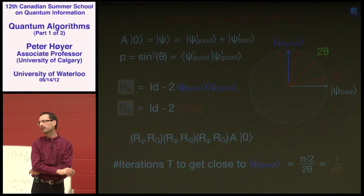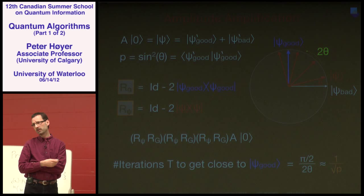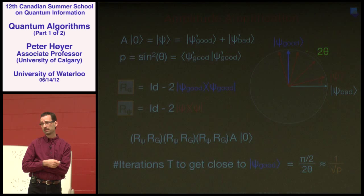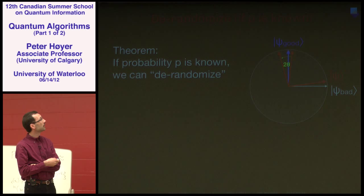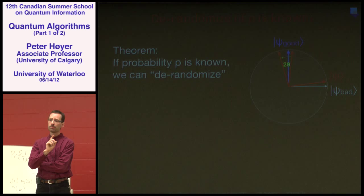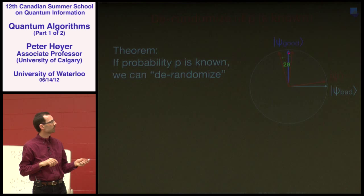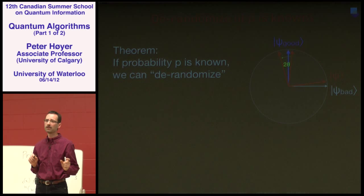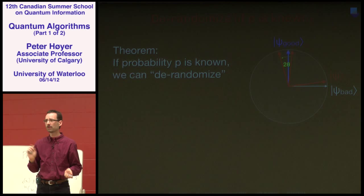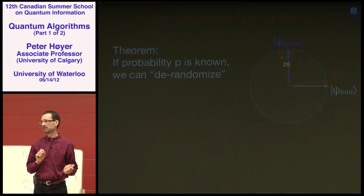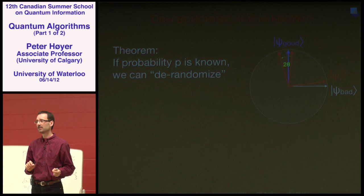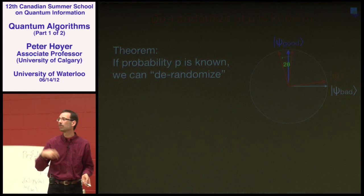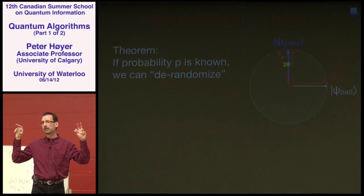Physicists with a physics background could have rediscovered Grover's algorithm from basic principles about driving states. There's an interesting computer science question: is it possible to get exactly ψ_good — not just very close — with probability one? Can one derandomize this? If you know P (i.e., θ), you can potentially engineer the algorithm to land exactly on ψ_good.